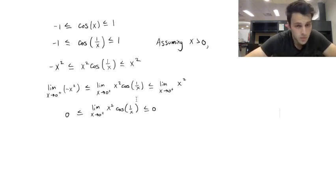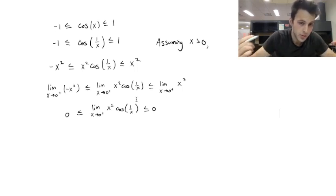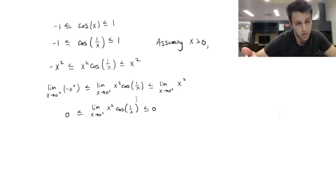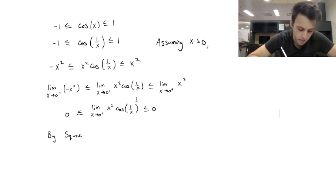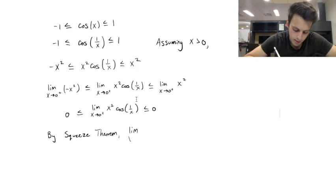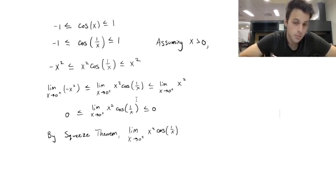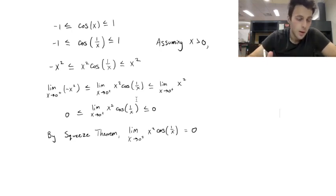So by squeeze theorem, you can say that this thing in the middle, if it's being squeezed by 0 and 0, then as x approaches 0 from the right, this must also evaluate to 0. And whenever you're applying a theorem like this, you should make sure to always write the theorem that you're using. So by squeeze theorem, the limit as x approaches 0 from the right of x squared cosine 1 over x, this is equal to 0. We basically apply squeeze theorem once, but we're not entirely done because we need to check the left-hand side.